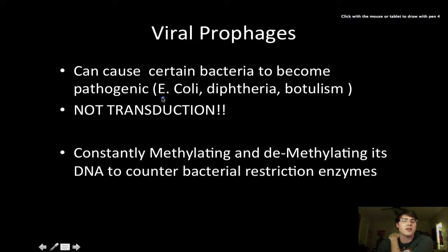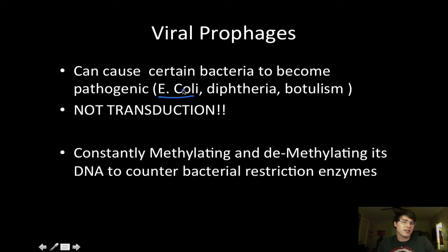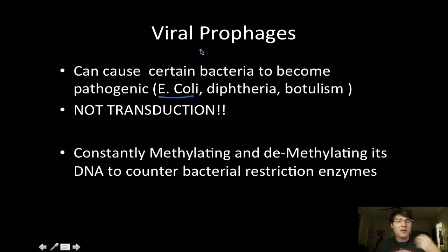Take, for example, E. coli — a gram-negative bacteria that lives inside your intestine. It's not going to really hurt you, but it's also notoriously known for causing food poisoning. This is what happens whenever that viral prophage gets integrated: it becomes pathogenic and starts acting with very different behavior compared to when it normally would.